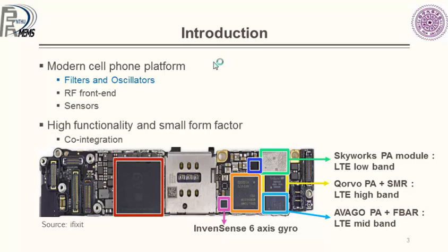We see F-bars and SAW as front-end filters for band selection. Recent trends have seen modules used for the RF front-end — a power amplifier and F-bar module for the LTE mid-band, and a power amplifier and SMR module for the high band. There are also a plethora of sensors in cell phones including gyroscopes, pressure sensors, and recently a prototype piezoelectric-based gas sensor expected to be integrated in future devices.